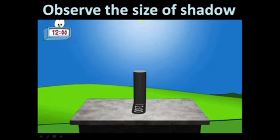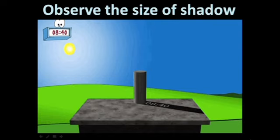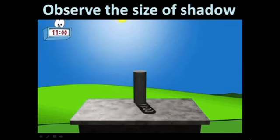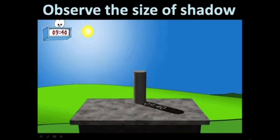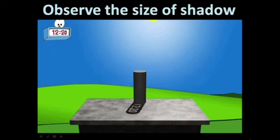Now, one more observation children. See the size of shadow when it is in the morning and when it is turning afternoon, it is getting shorter and shorter. So, the image of any object is longest during the morning and evening and it is shorter in the afternoon.